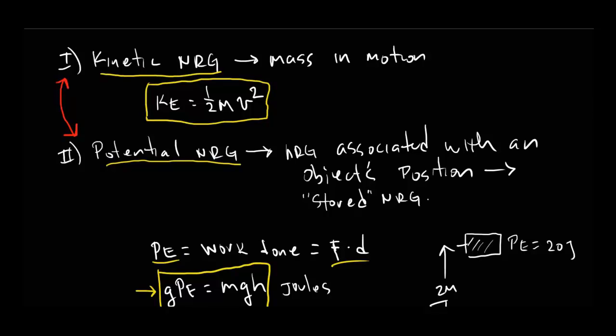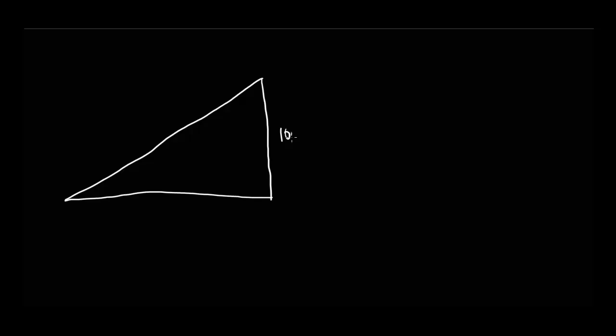To illustrate that, let's come up with an example. Maybe we have a ramp that's 10 meters high — from the ground to the top is 10 meters. We'll assume this ramp is frictionless, which is helpful because friction produces heat, and heat isn't mechanical energy. Let's say we have a one-kilogram block starting at the top of the ramp at rest.